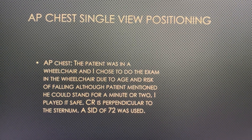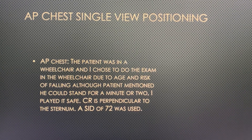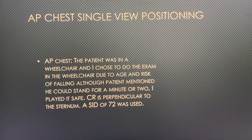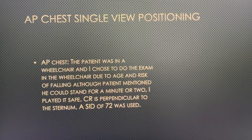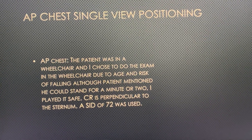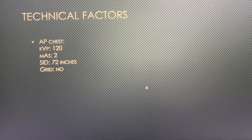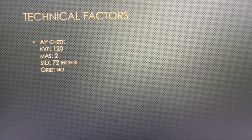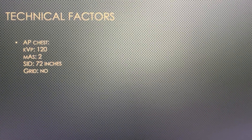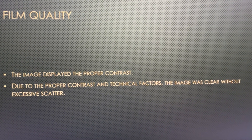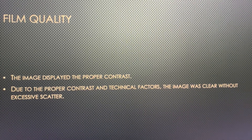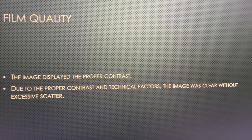We took one single AP chest view. The patient was in a wheelchair; we placed the IR behind him and angled the tube perpendicular to the sternum. An SID of approximately 72 inches was used. The technical factors were 120 kVp, with mAs and SID of 72, and no grid.